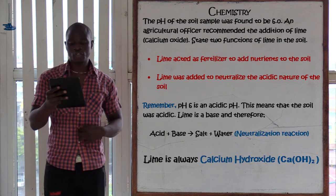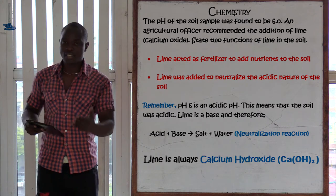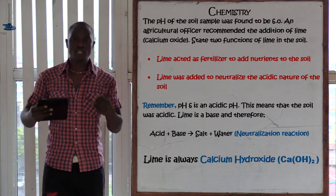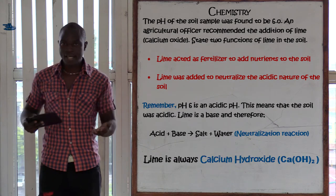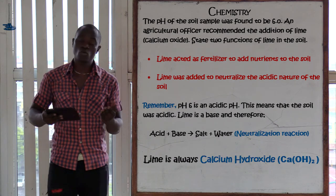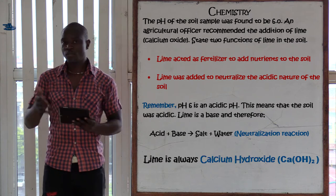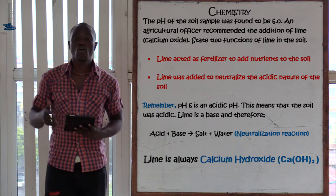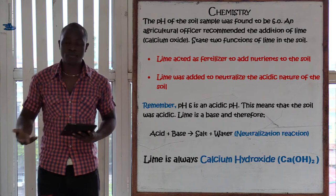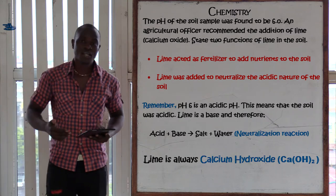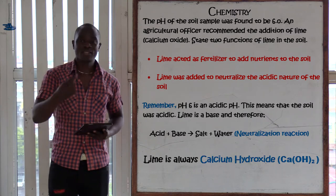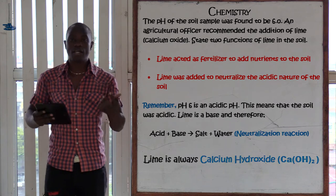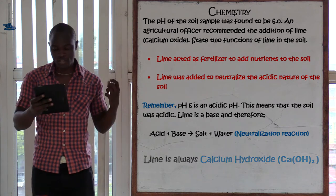The second function of lime in the soil is to add nutrients. Lime acts as a fertilizer, adding nutrients to the soil. So the two functions are: neutralizing the acidic nature of the soil and adding nutrients.